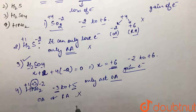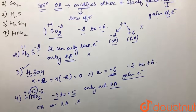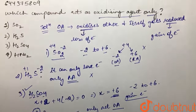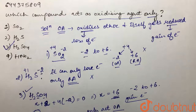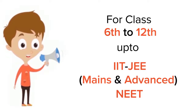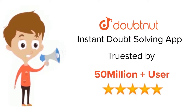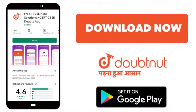The only correct option is H₂SO₄, which is the third option. H₂SO₄ is the only compound that can act as an oxidizing agent only. For class 6 to 12, IIT JEE and NEET level — trusted by more than 5 crore students — download the DoubtNut app today.